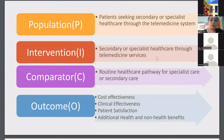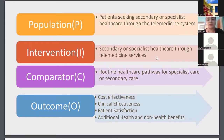This was the PICO that we kept in mind when we did the literature search. The population being patients seeking secondary or specialist healthcare through telemedicine. The intervention being secondary or specialist healthcare through telemedicine services. The comparator being routine healthcare pathway for specialist or secondary care. And the outcomes were cost effectiveness, clinical effectiveness, patient satisfaction, and additional health and non-health benefits.